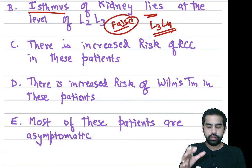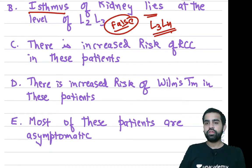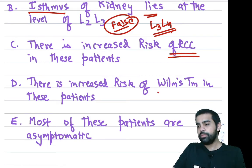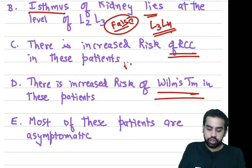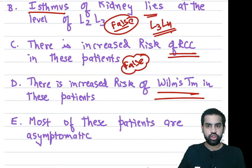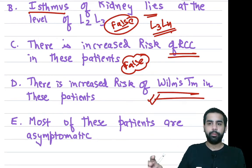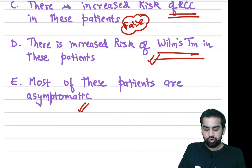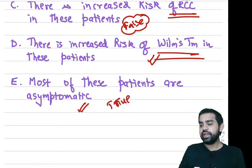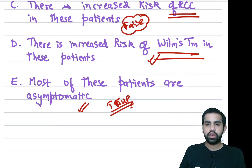Are patients with horseshoe kidney at increased risk of malignancy? The risk of renal cell carcinoma in horseshoe kidney is the same as the general population. However, the risk of Wilms tumor is significantly increased compared to the general population. Most patients with horseshoe kidney are asymptomatic — it is usually an incidental finding.